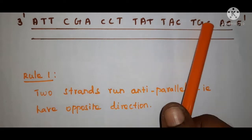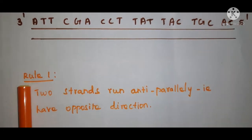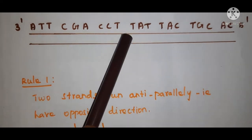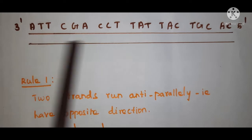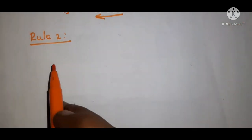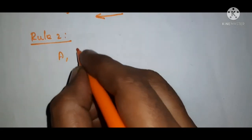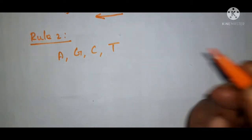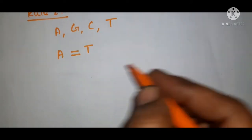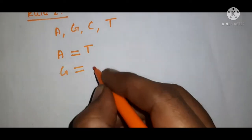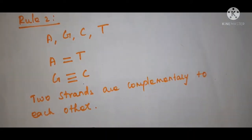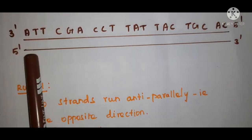To write the complementary strand for the given DNA sequence we have to follow two rules. The first rule is that the two strands run anti-parallelly, that is they have opposite directions. So the given DNA strand starts with 3' end and ends with 5' end, and the complementary strand starts with 5' end and ends with 3' end. Rule number 2: DNA has four bases — adenine, guanine, cytosine, and thymine — and the sequence of one strand dictates the sequence of nucleotides in the other.